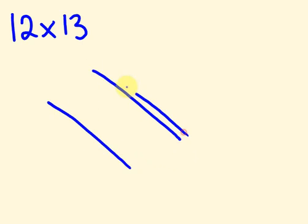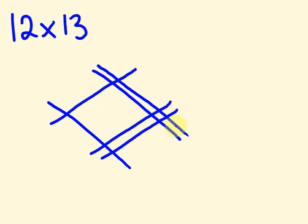12 times 13. Now the way we do this is we draw diagonal lines running from left to right but going diagonally. You'll see what I mean. So here we go. 12 I draw as 1 and a 2. And 13 I draw as 1, 1, 2, 3.